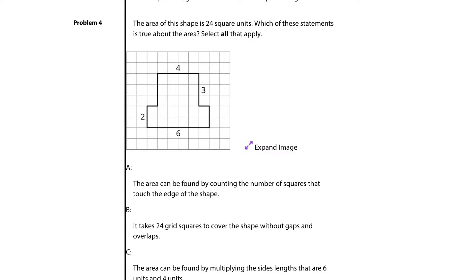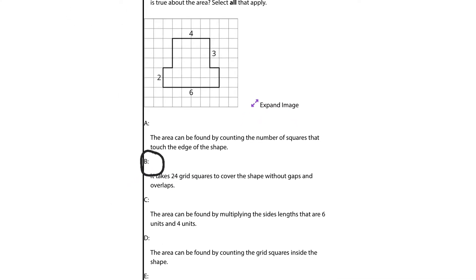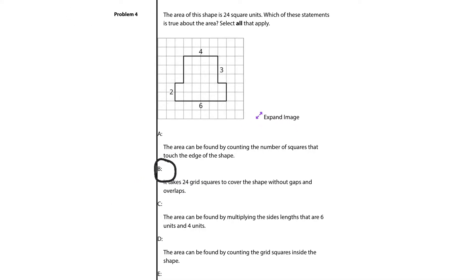B. It takes 24 grid squares to cover the shape without gaps and overlaps. That is true. So, B is a possible solution here. C. The area can be found by multiplying the lengths that are 6 units and 4 units. Well, that does get us 24, but that's not how we're going to solve this area here. What about D?